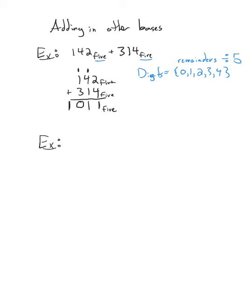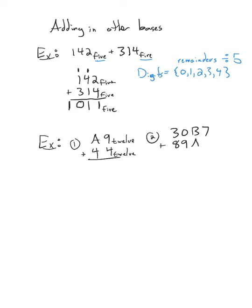Let me give you some base twelve problems to try. The first is a shorter one: 9A4 plus 44, base twelve. The second is a longer four-digit one: 330B7 plus ACE9A9, base twelve. Remember, we can't regroup until we have twelve of something in base twelve. If we have ten things we represent that with the letter A, and eleven things with the letter B. Give those a go.